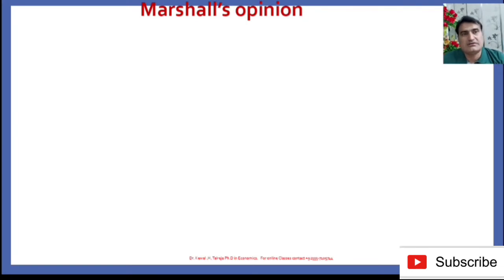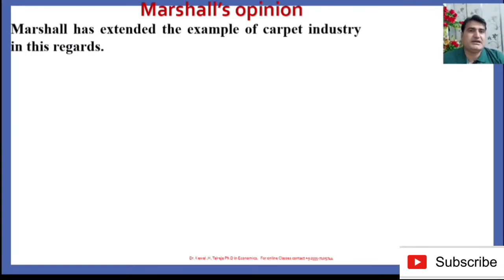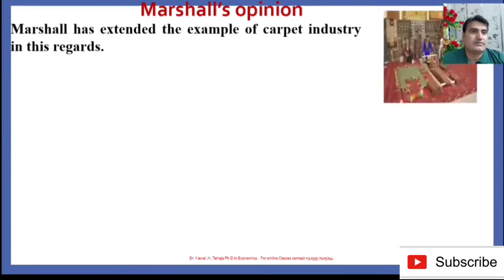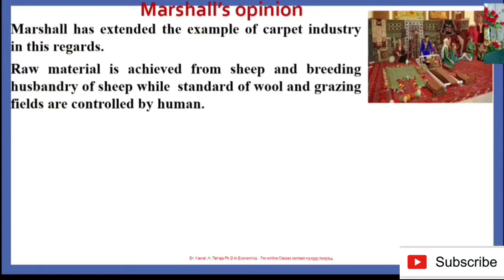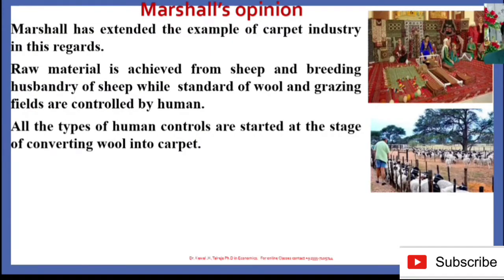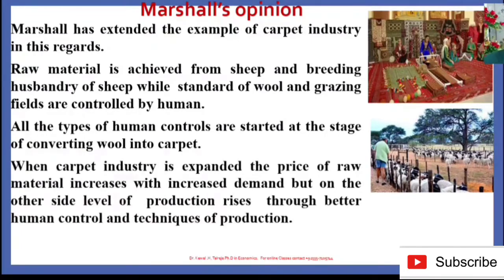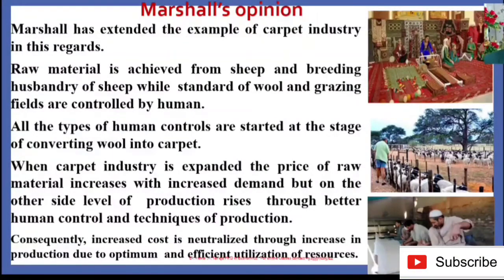What is Marshall's opinion with regards to constant returns to scale? Marshall extended the example of the carpet industry in this regard. Raw material is obtained from sheep and breeding of sheep, while the standard of wool and grazing fields are controlled by humans. All types of human control start at the stage of converting wool into carpet. When the carpet industry is expanded, the price of raw material increases with increased demand, but the level of production rises through better human control and techniques of production. Consequently, the increased cost is offset through increased production due to optimum and efficient utilization of resources.